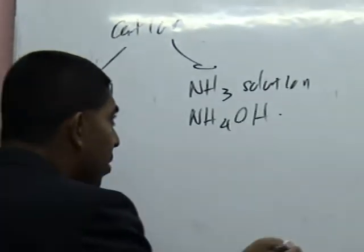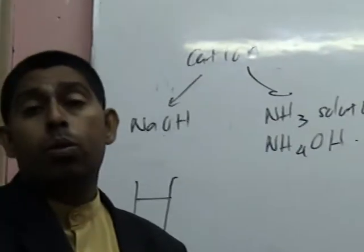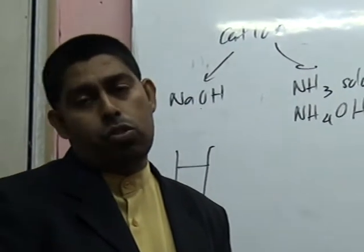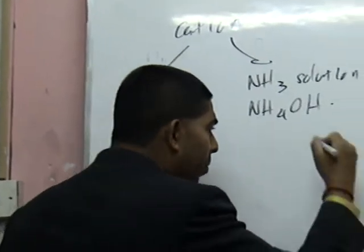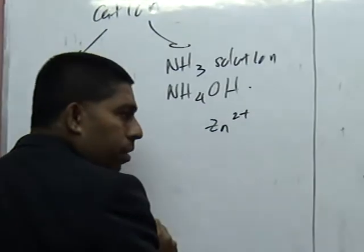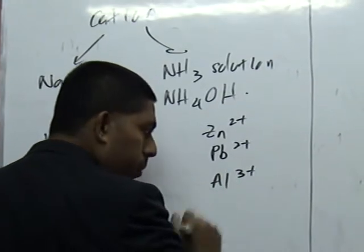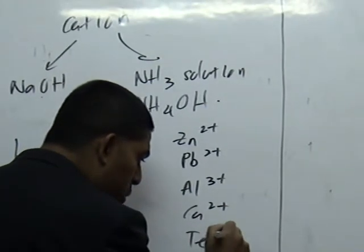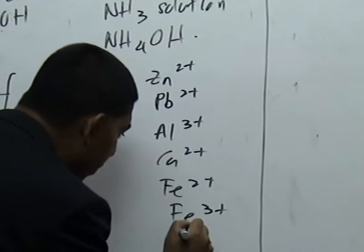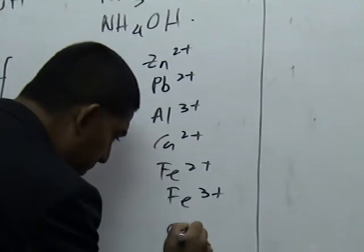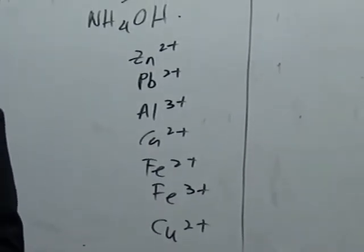So, I hope I have cleared this doubt for you because many people do not understand. Now, the second part is that how do you remember? How do you remember? So, only certain cations are tested in your examination. So, those cations that you need to know would be zinc, lead, aluminium, calcium, ferrum 2, ferrum 3, copper. These are those which will be tested in your exam.